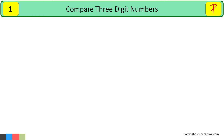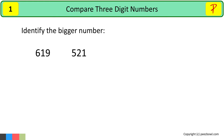Hi. We are learning three digit numbers. In this video, we will see how to compare three digit numbers. To start with, I will take two three digit numbers. Say for example, we have 619 and 521. We need to find out which number is bigger. I will tell you a very simple rule to identify which number is bigger or smaller.